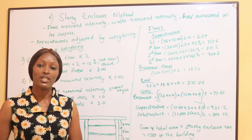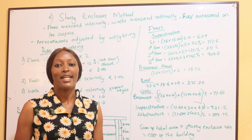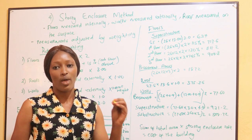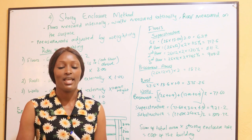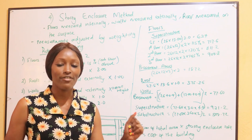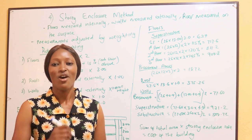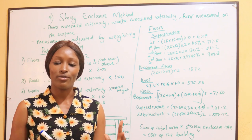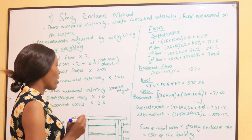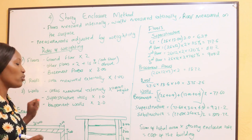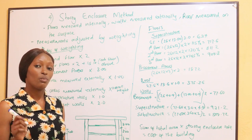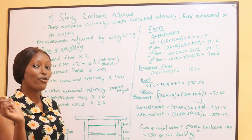For the second floor, we multiply by a factor of two and add an additional 15% from the first floor, making it 130%. Third floor: multiply by two plus 145%. Fourth floor: multiply by a factor of two plus 160%. Then we go to the basement floors. For basement floors, we take the area and multiply by a factor of three.